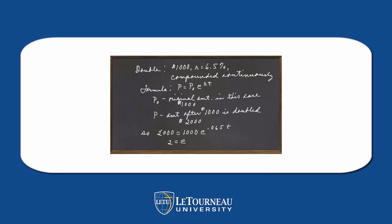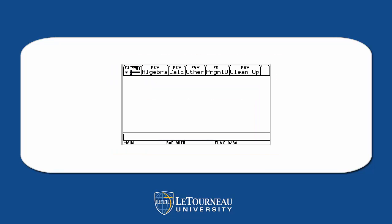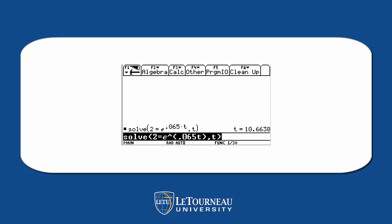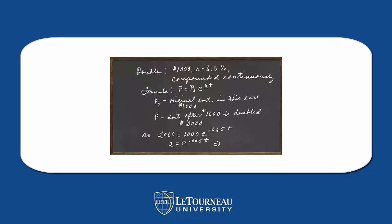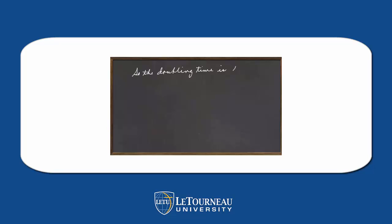Notice we could divide both sides by 1,000 and simply have 2. We definitely don't try to solve that type of equation by hand, so we're going to use our calculator and solve 2 equals e to the 0.065t, asking it to solve for t. Our calculators are very smart, and in this case it's going to take about 10.6 to 10.7 years — the doubling time is 10.68 years.